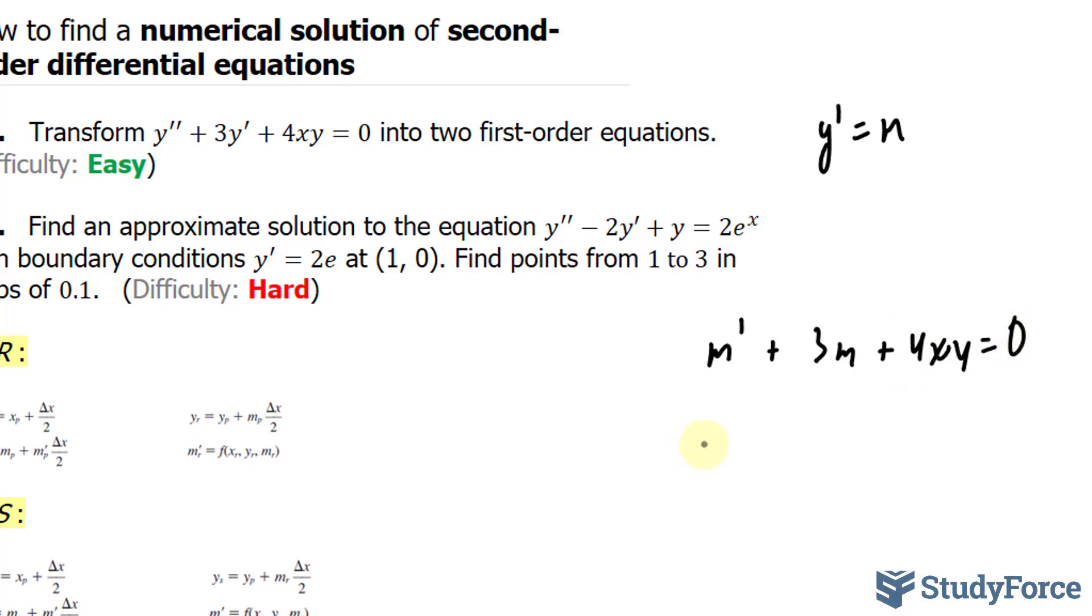Now we solve for m'. We get m' = -3m - 4xy. This is the second of the two first-order equations. Another way you can write this one is by saying m' = f(x, y, m).